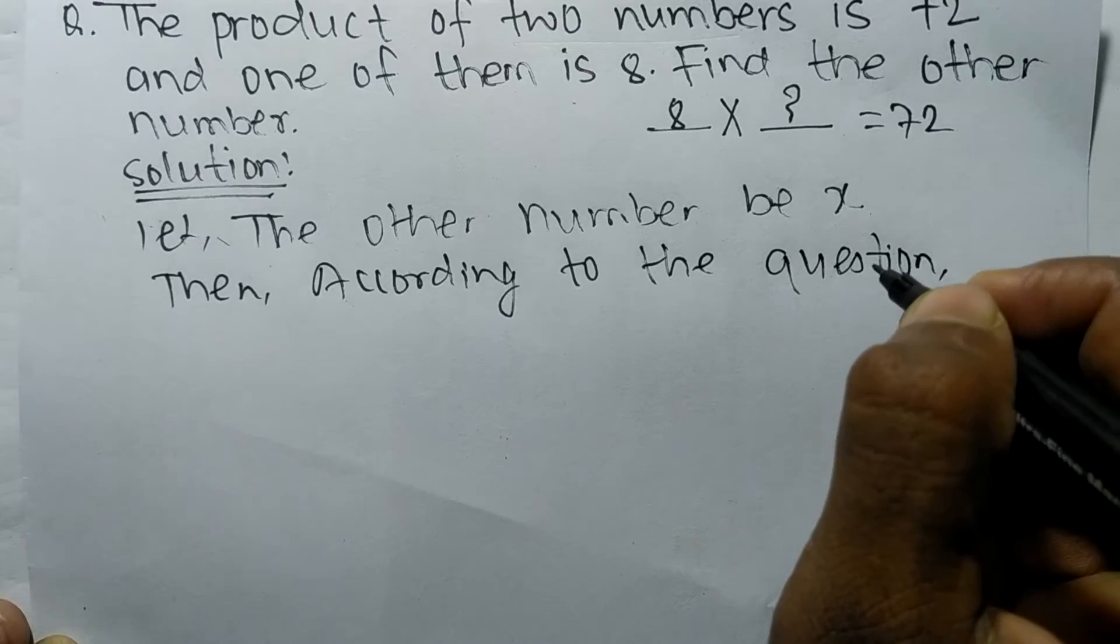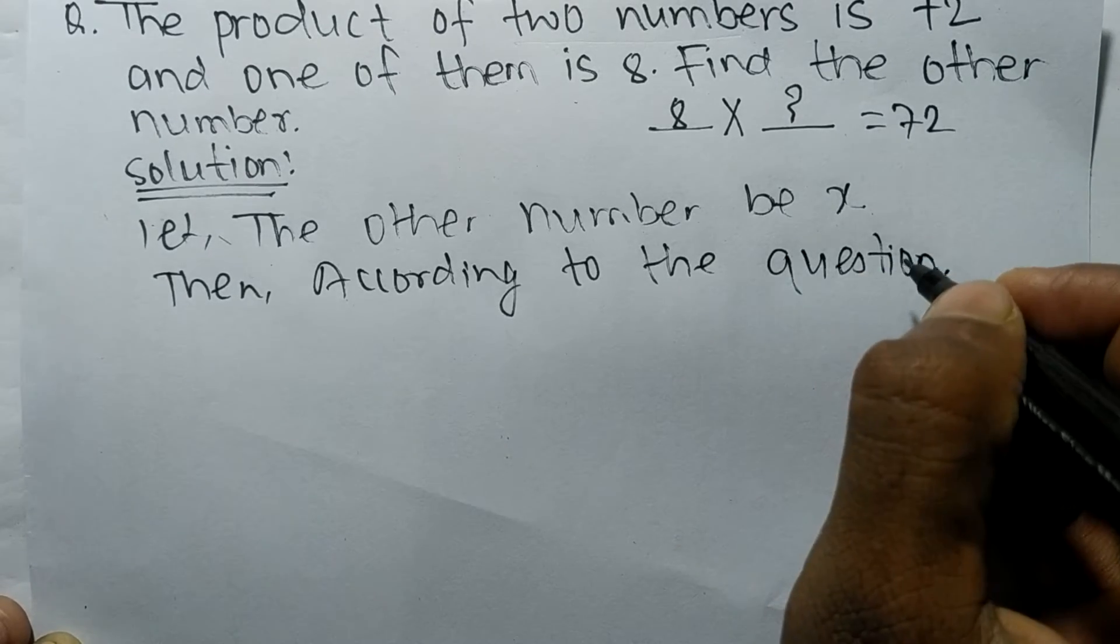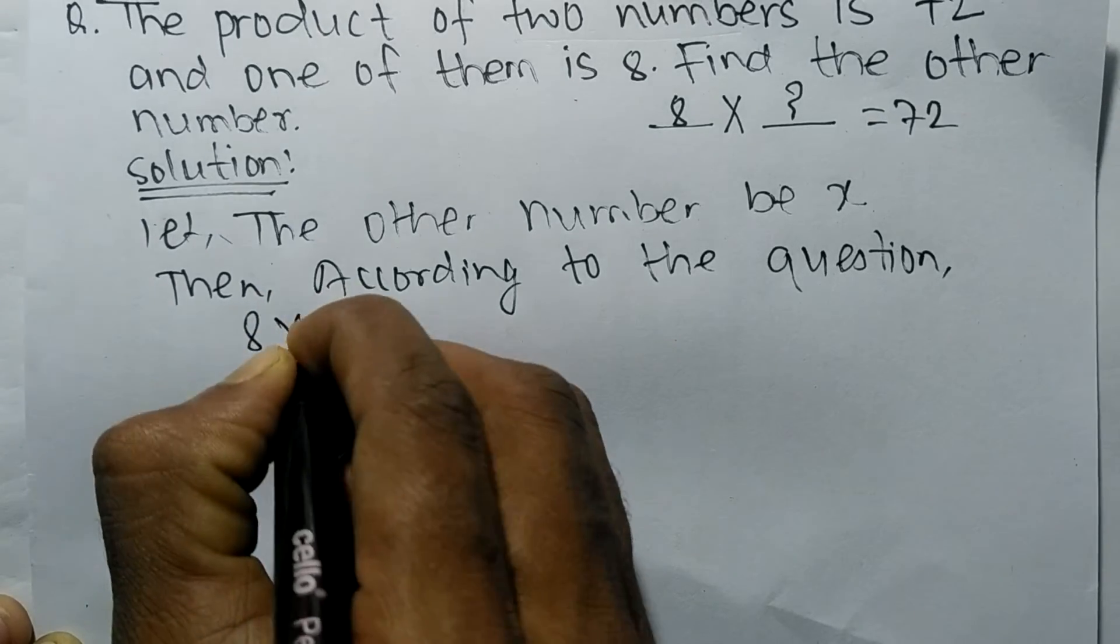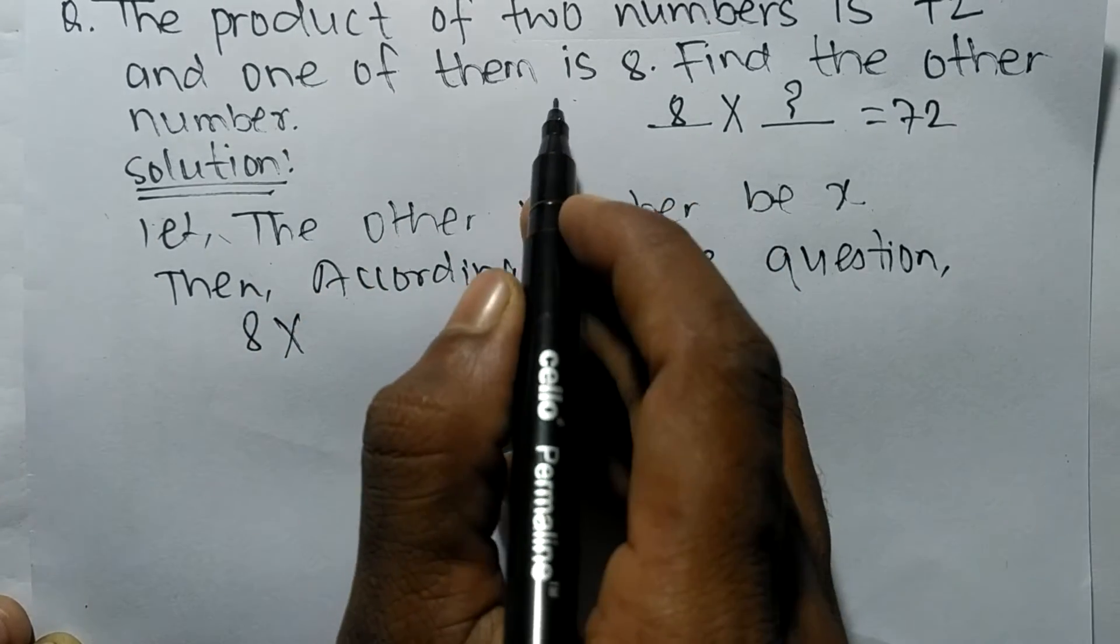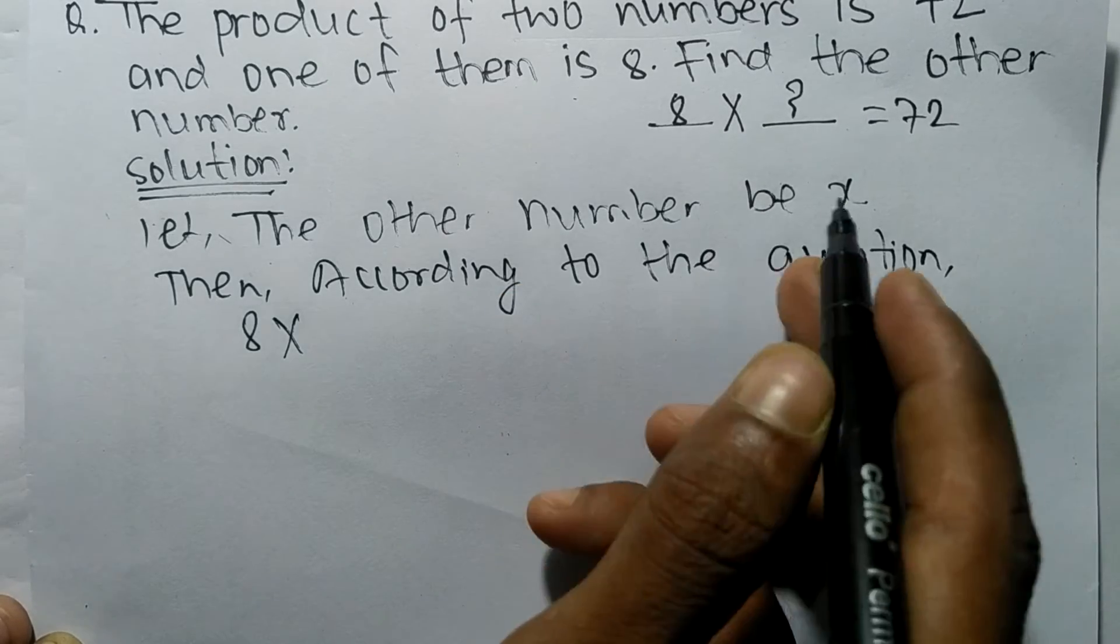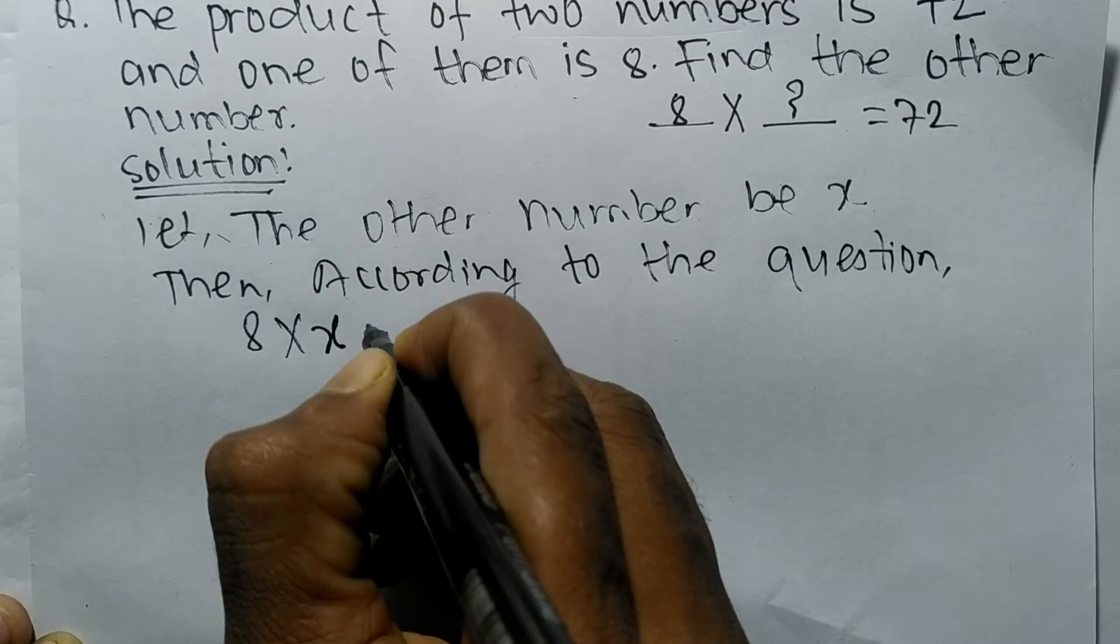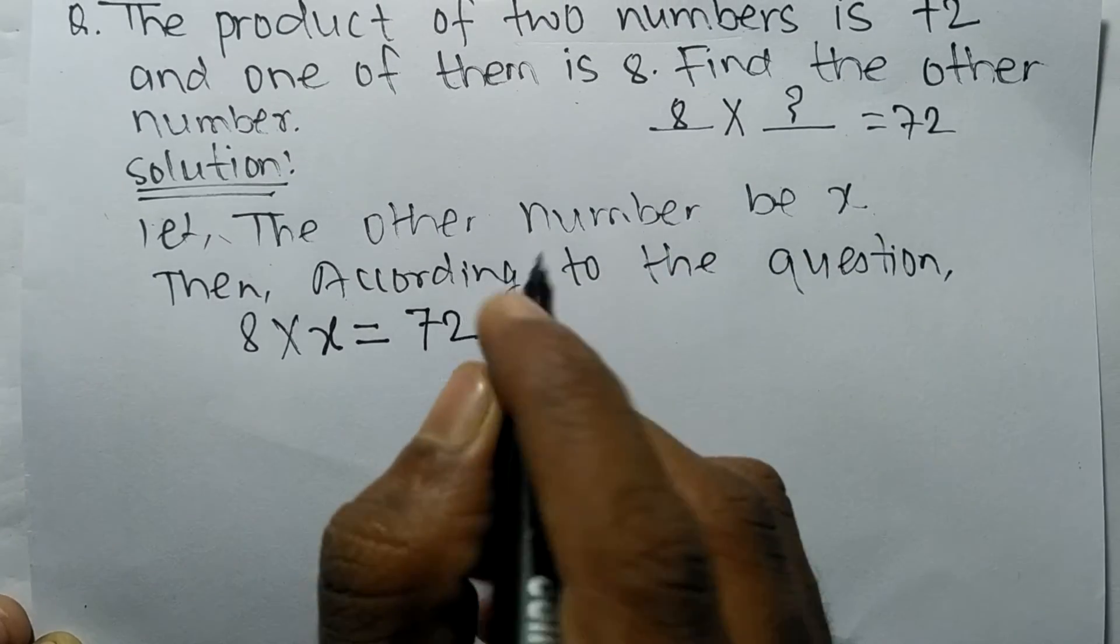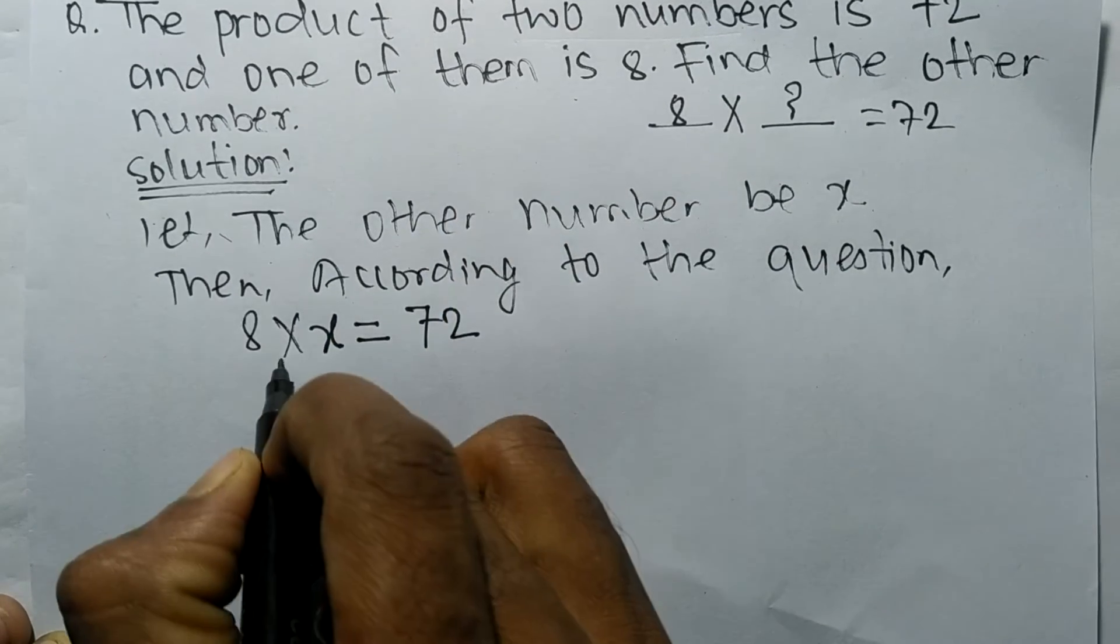Then according to the question, we get 8 into x. The first number is 8, we have given one is 8, and we let here another number x, which is equal to 72. So according to the given condition we get here the equation.